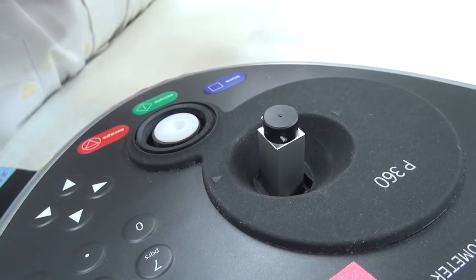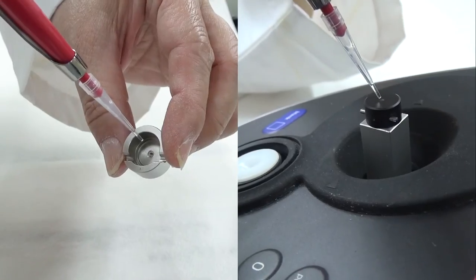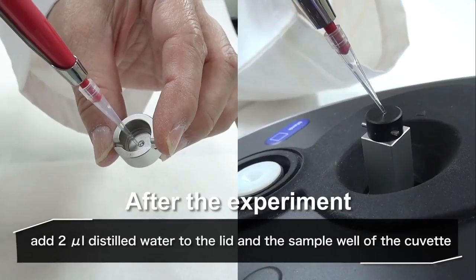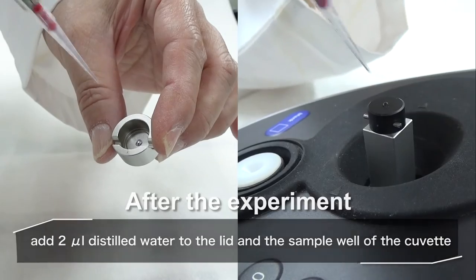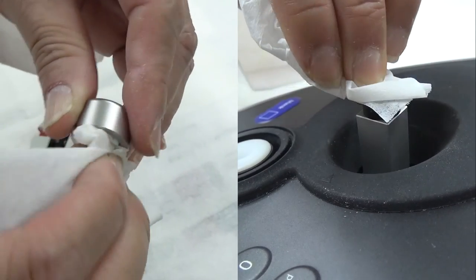17. Continue to measure the next sample. 18. After the experiment, add 2 microliter distilled water to the lid and the sample well of the cuvette, respectively. Wipe clean with a Kim wipes tissue.